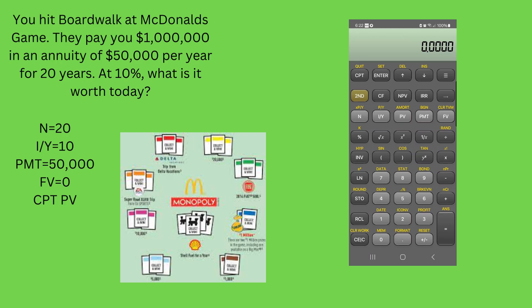In this game, the big piece was Boardwalk. And if you landed on Boardwalk, McDonald's would pay you a million dollars, but it was paid out as an annuity of $50,000 a year for 20 years.